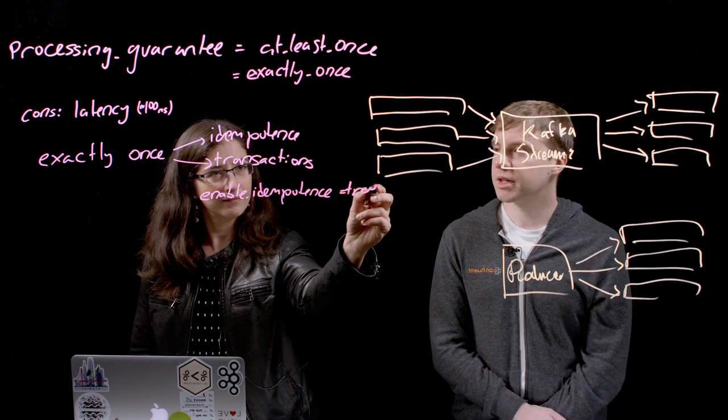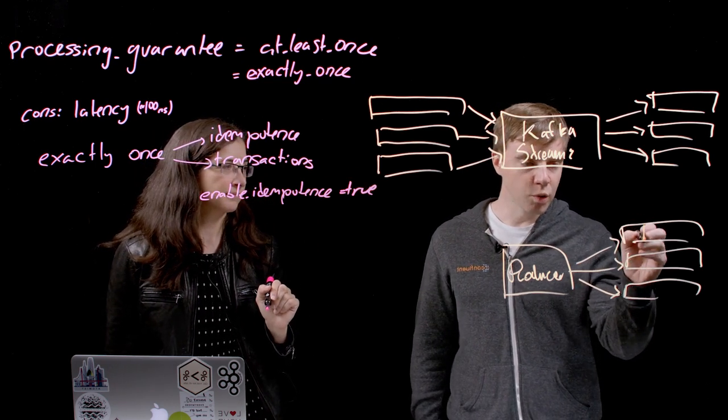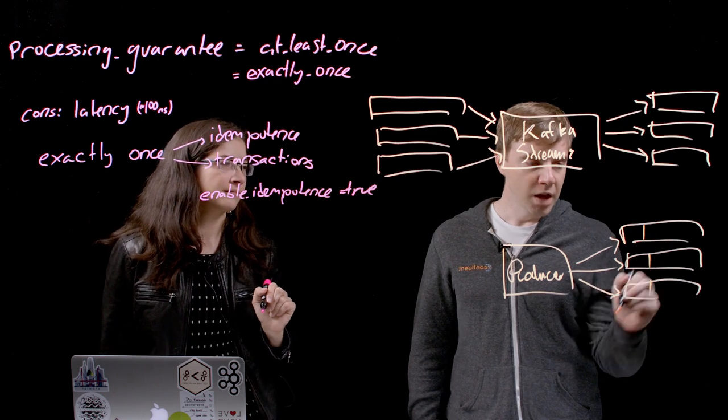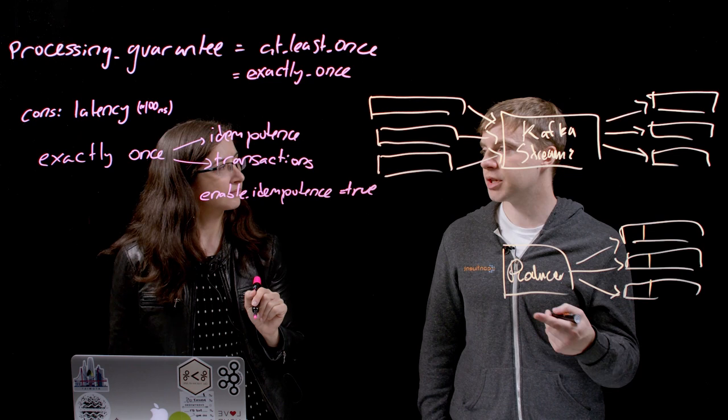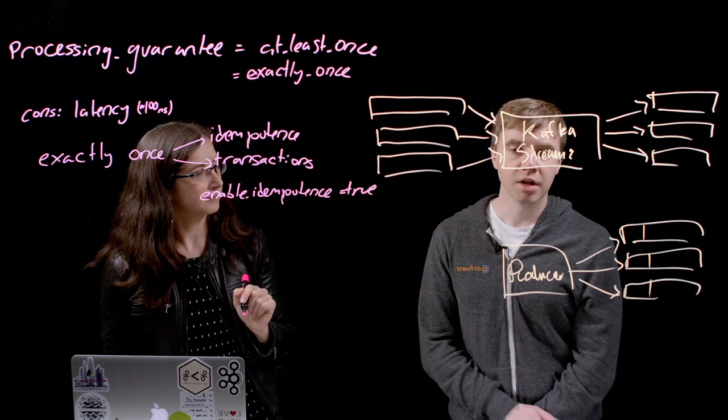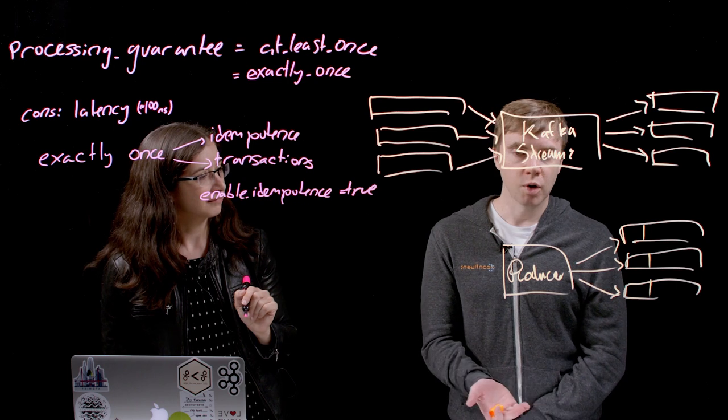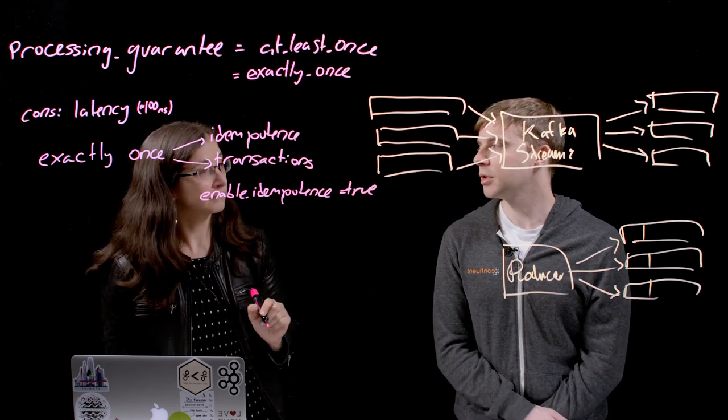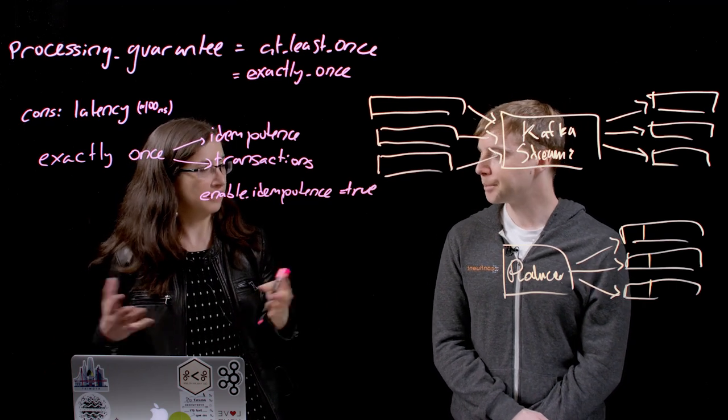And additionally, it ensures that when we retry, we will be able to preserve the ordering. So that's the first part. It's really about ensuring the ordering and the deduplication on a per partition level. Now the second part is transactions. What transactions is doing is giving you the ability to write to multiple partitions in an atomic way. When you write to the partitions in a transaction, they will either all be committed or they will all be aborted. So you get all of it or none of it.